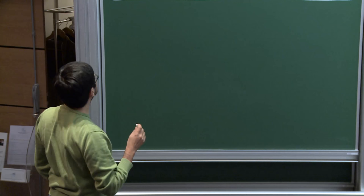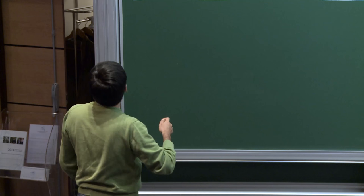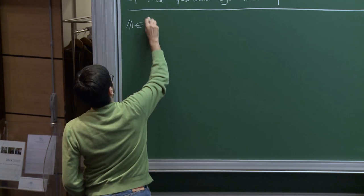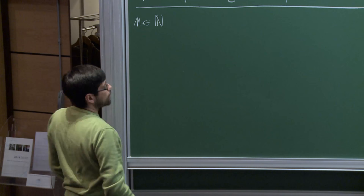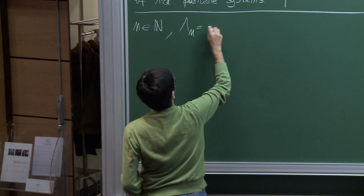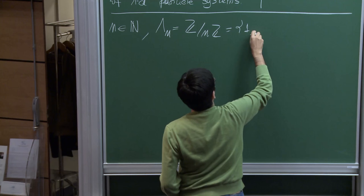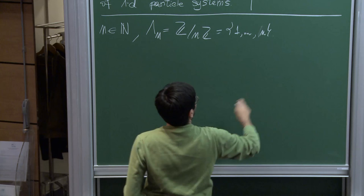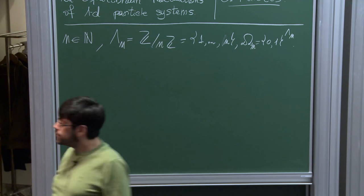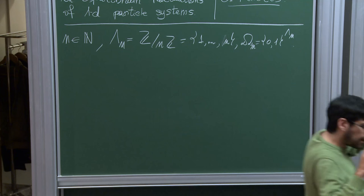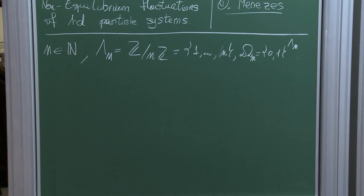Just to repeat a little bit the notation of Thierry and fix some others: let n be a natural number, the scale parameter of my system. I'm going to consider a family of Markov chains indexed by this parameter n. Let Λ_n be the discrete circle with n points, which we can identify with the set {1,...,n}. Let Ω_n be the set of binary sequences of length n. From the notation it's clear that I'm considering periodic boundary conditions — I'm thinking about a circle of n points.